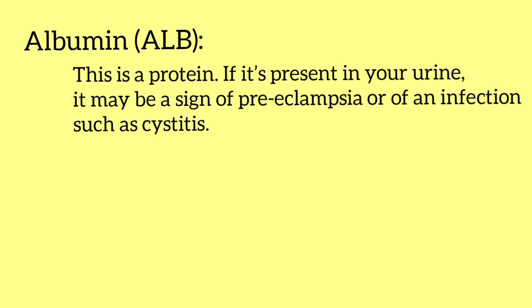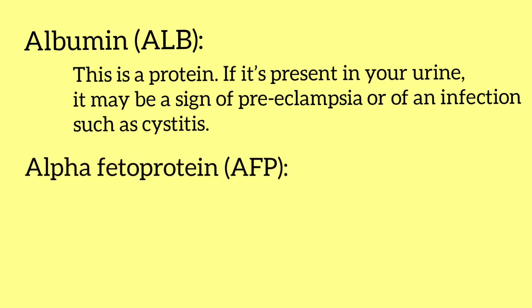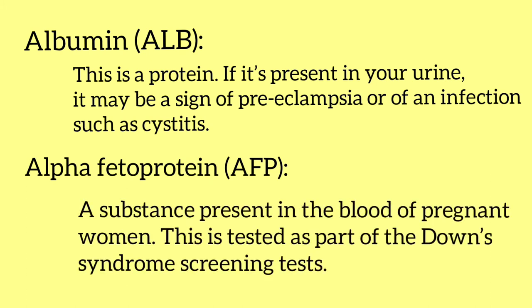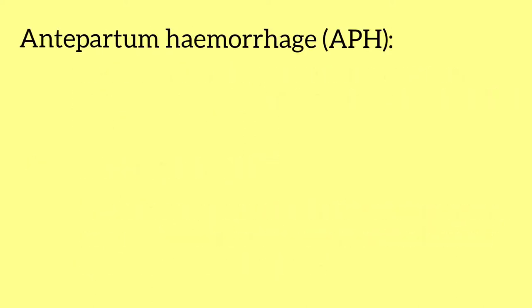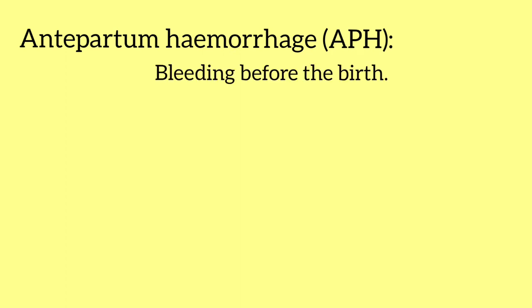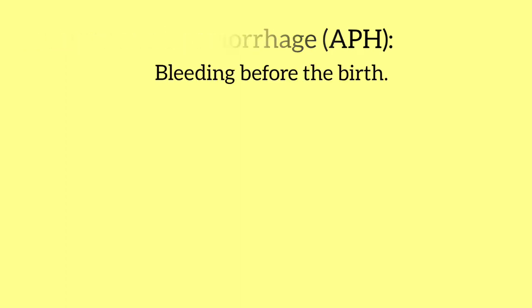Albumin is a protein, and if it is present in your urine, it may be a sign of preeclampsia or infection such as cystitis. Alpha fetoprotein is a substance present in the blood of a pregnant woman and is tested as part of the Down syndrome screening test. Antepartum hemorrhage, or APH, means bleeding before the birth.